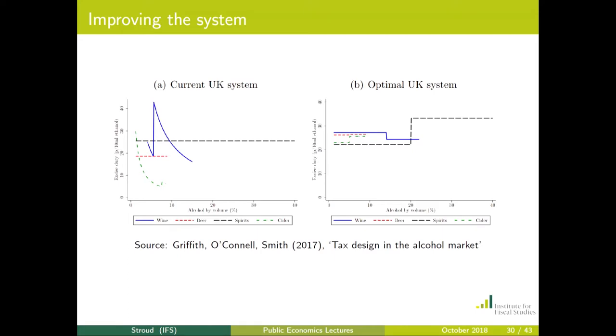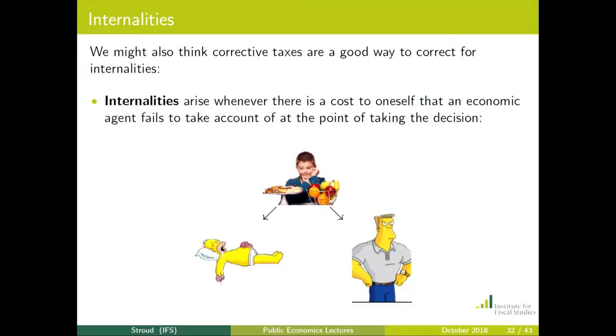Thirdly, beyond externalities, another rationale sometimes put forward for corrective taxation is correcting for internalities. In the same way that an externality is a cost imposed upon someone else that the individual doesn't have to take into account at the point of decision, an internality is a cost imposed on oneself that you fail to take account of when making a decision.